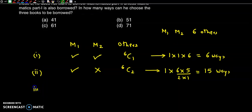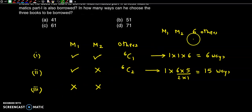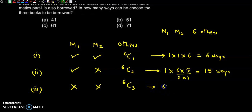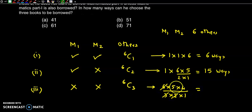Case 3: He selects neither Maths Part 1 nor Maths Part 2. He must choose all 3 books from the 6 others. So this gives 6C3 = (6×5×4) / (3×2×1) = 20 ways.